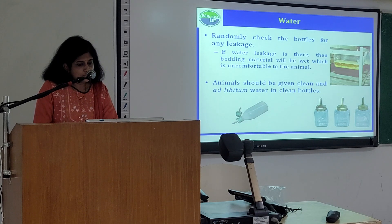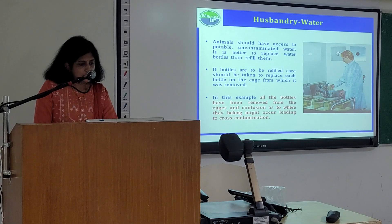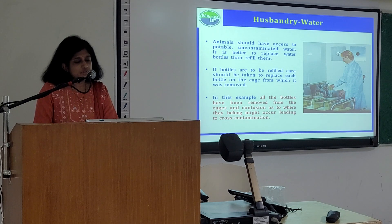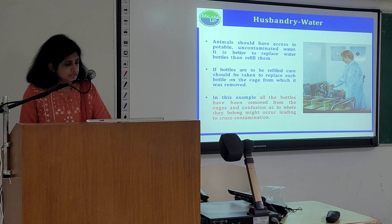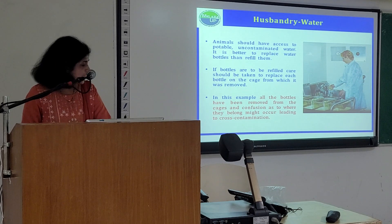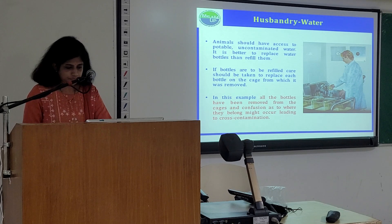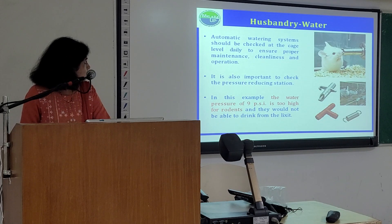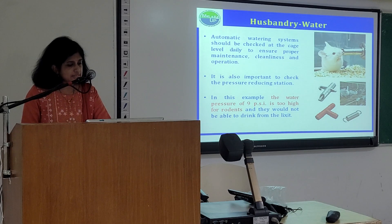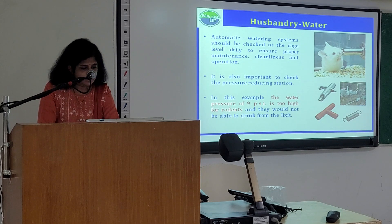For water, randomly check the bottles for any leakage. If water leakage is present, bedding material will be wet, which is uncomfortable to the animal. Animals should be given clean ad libitum water in clean bottles. Animals should have access to potable, uncontaminated water. It is better to replace water bottles than to refill them. If bottles are to be refilled, care should be taken to replace each water bottle on the cage from which it was removed, to avoid cross-contamination. Automated watering systems should be checked for cleanliness and operation, including checking the pressure-reducing valve. For example, a water pressure of 9 PSI is too high for rodents and they would not be able to drink.